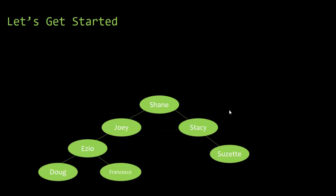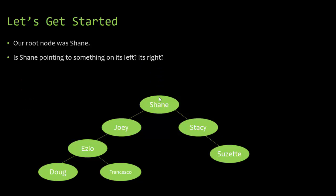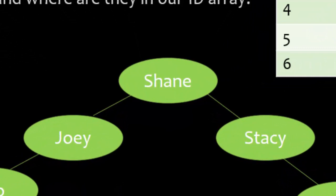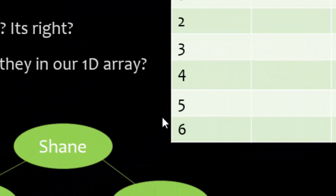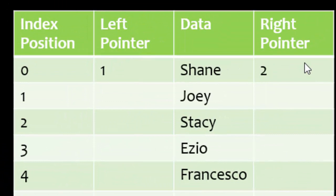So our root node is Shane. Is Shane pointing to something on its left? Yes. On the right? Yes. Shane's left pointer is 1 because Joey is at index position 1, and the right pointer is 2 because Stacy is at index position 2. For Joey: he's pointing only to the left — to Ezio at index 3. Because Joey isn't pointing to anything on the right, we can't use the number 0 (that would mean pointing back to Shane, which is impossible). So we use a null value, represented as a 0 with a line through it.